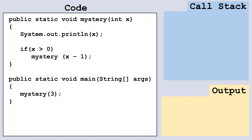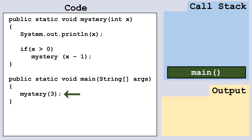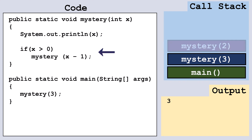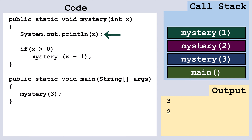Now let's look at our second code example which demonstrates tail recursion. This almost identical method, also called mystery, takes an int input and prints the numbers from the input value down to zero in descending order using tail recursion. In this case the recursive call happens at the end of the method after other processing. We start with a call to the main method and push a frame onto the stack. When main calls mystery(3), another frame is pushed with x set to three. We print x, outputting three to the console. We check if x is greater than zero — it is — so we call mystery(2). Another frame is pushed with x set to two, we print two to the console, and check if x is greater than zero.